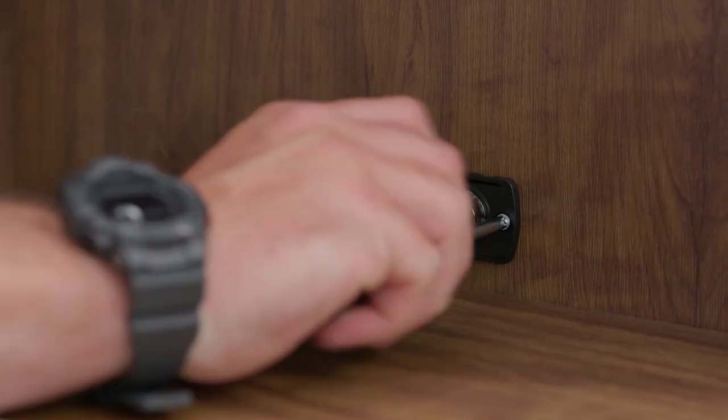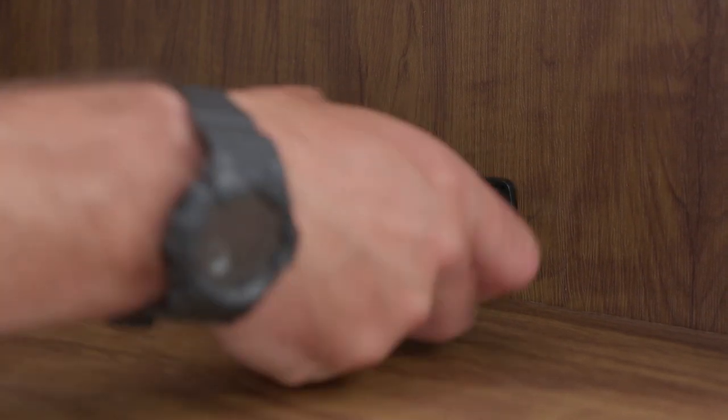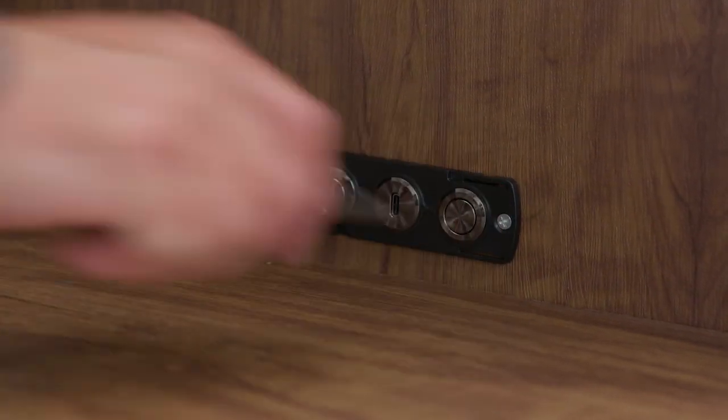Once in place, pass the cables through the hole in the wing and slide the switch into place. Ensure it is level and fix with small screws.